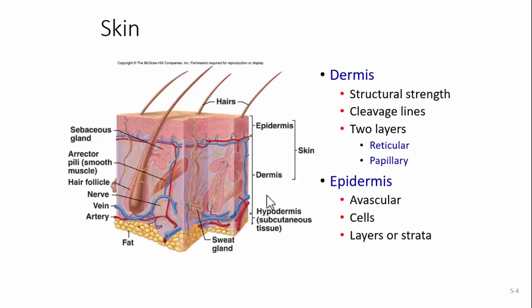Going back, the epidermis itself, which is the top layer, is an epithelial tissue. The dermis is made up mostly of connective tissue. The epidermis is going to be stratified squamous epithelium. It is stratified, so we have layers or strata, and we're going to have names for these different strata. The one important thing about the epidermis, just like with any epithelial tissue, is it's avascular — there's no blood supply. So how does it get its nutrients? It gets them from the dermis through diffusion.